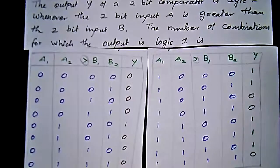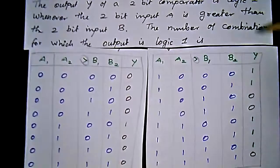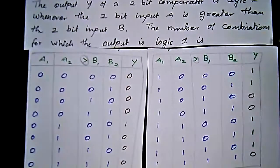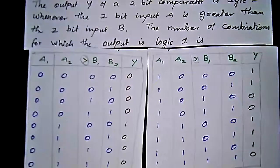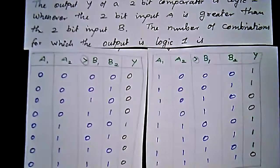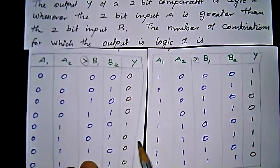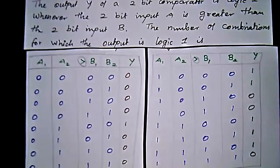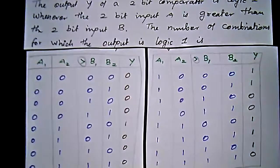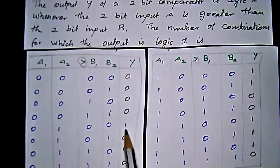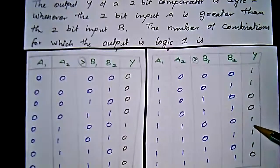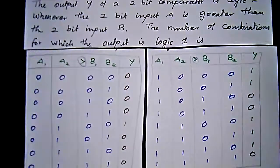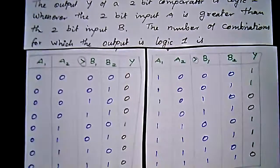They asked for the number of combinations for which the output logic is 1. Here we have output 1 written, so we count the number of 1s: 1, 2, 3, 4, 5, 6. So we have 6 combinations for logic output 1.